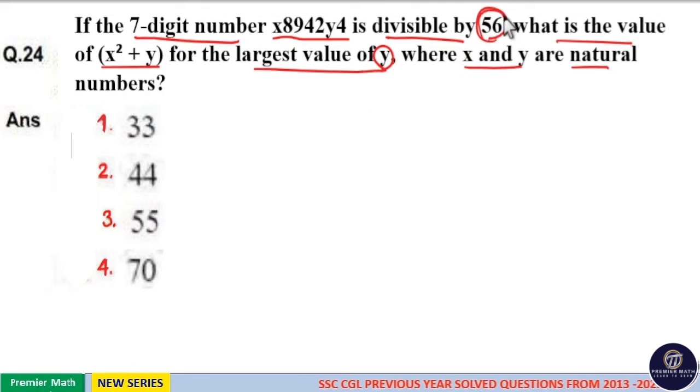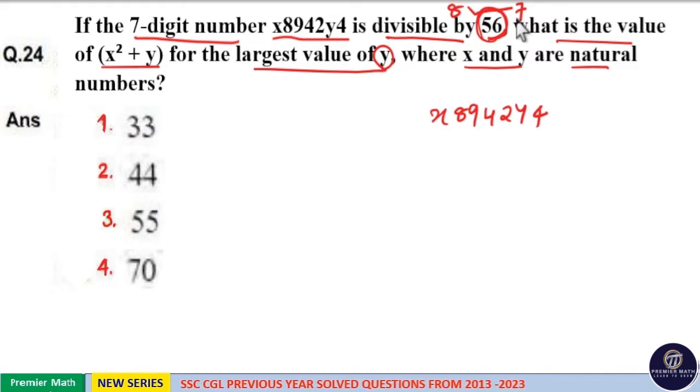When a number is divisible by 56, it should be divisible by both 8 and 7. That is, x8942y4 should be divisible by 8 and 7.